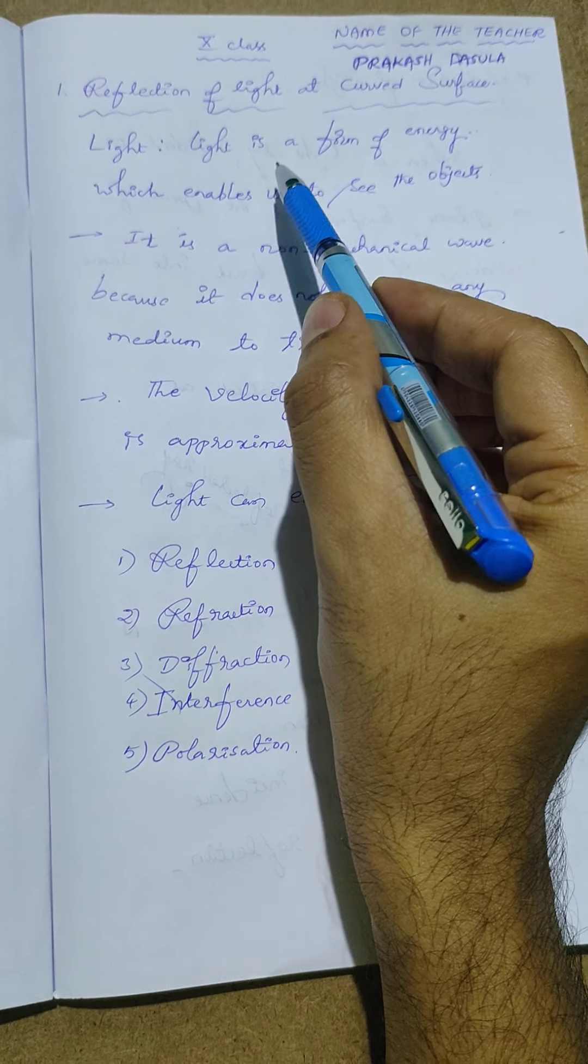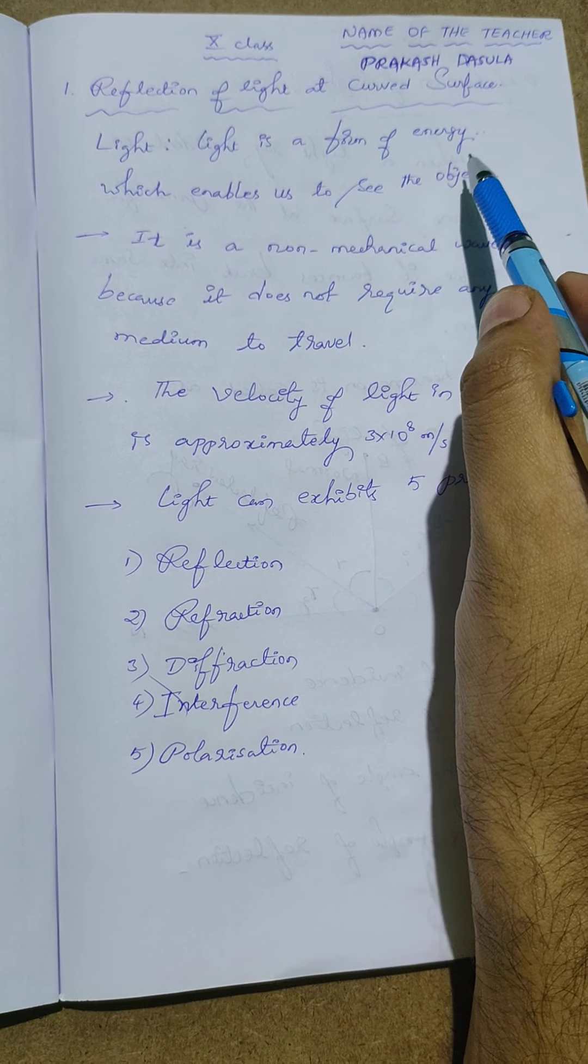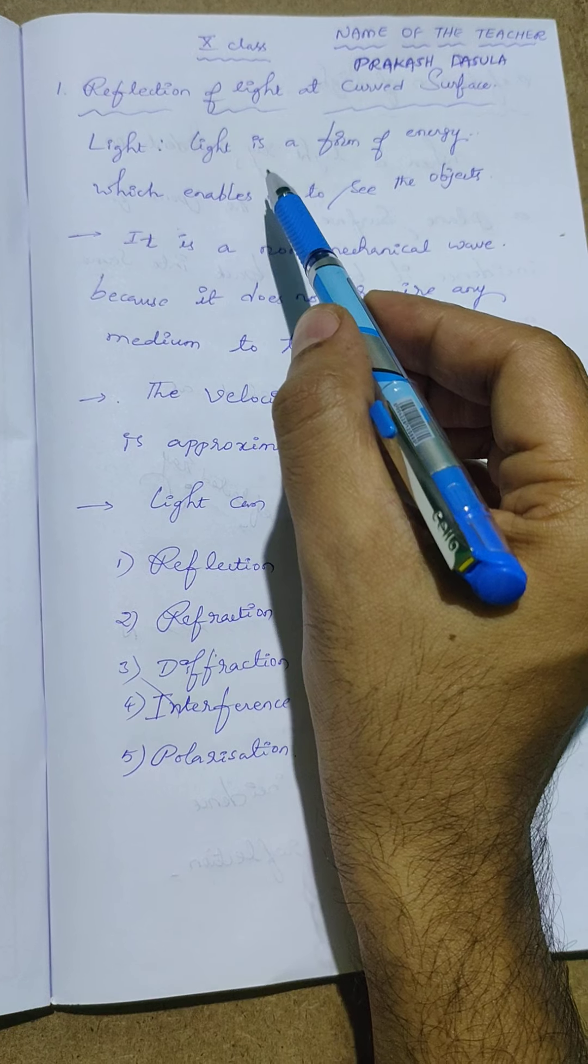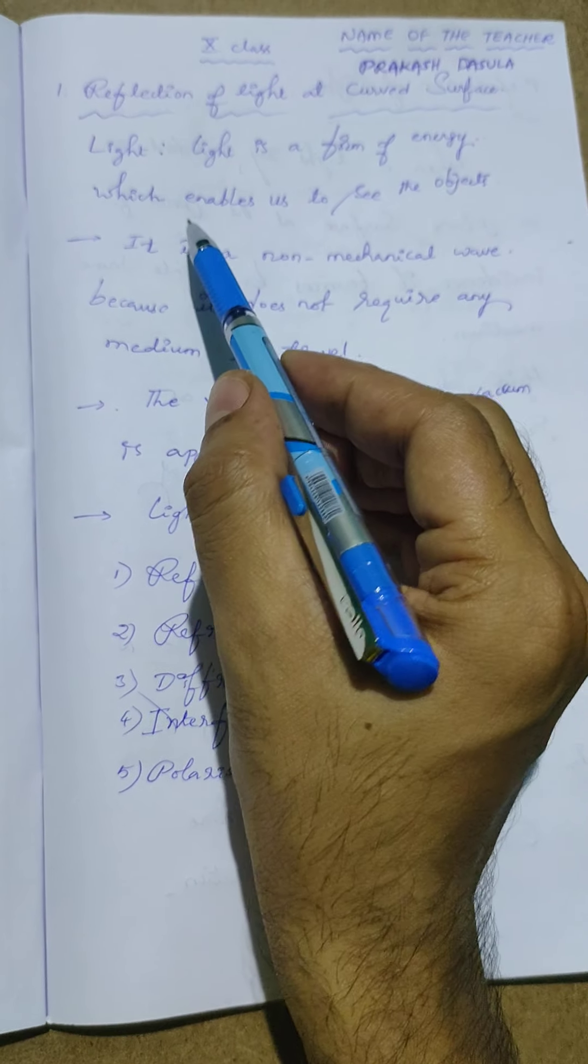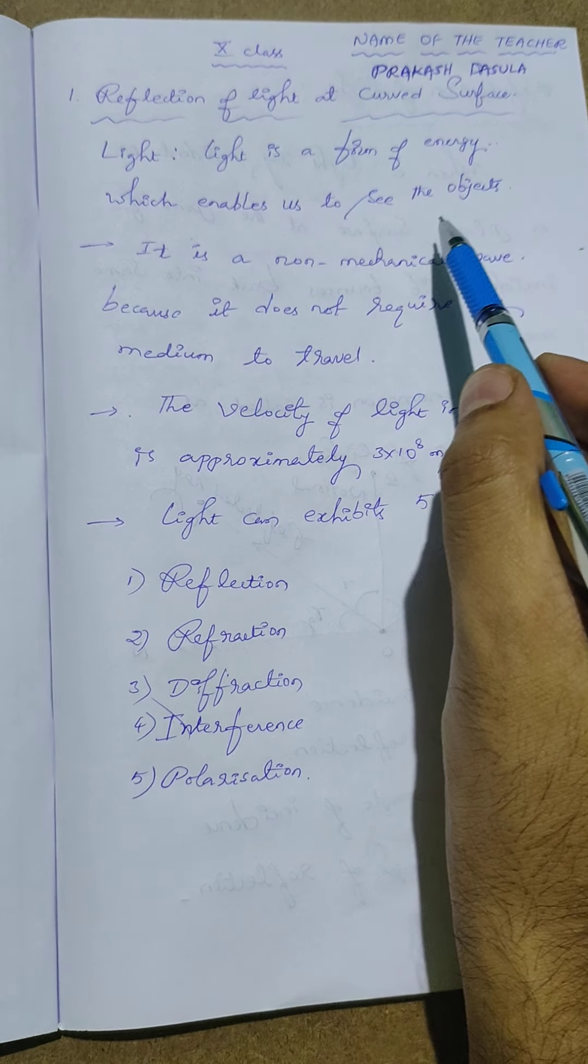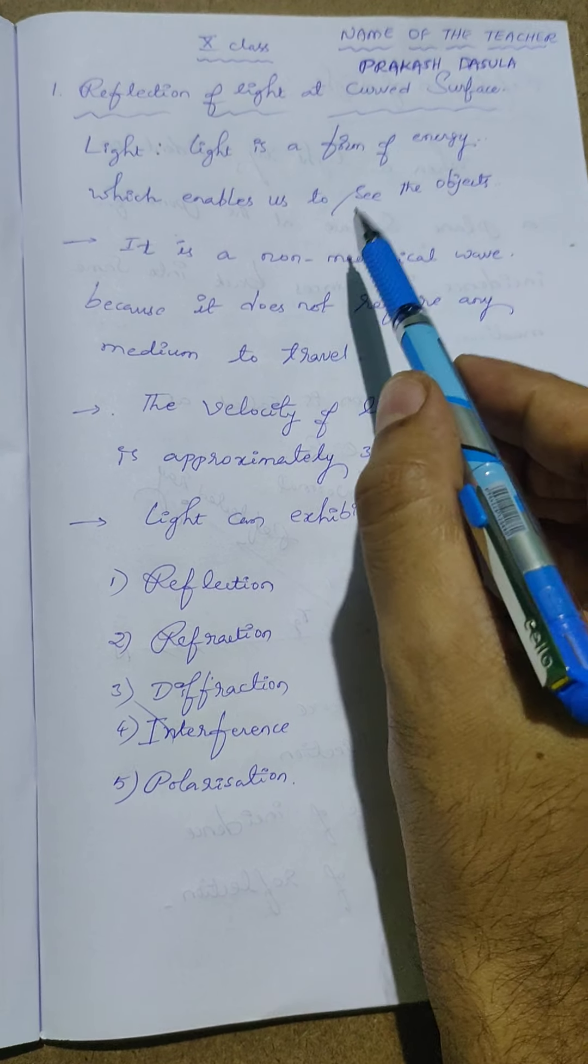What is meant by light? Light is a form of energy. So many energies we know, and light is a form of energy which enables us to see the objects.